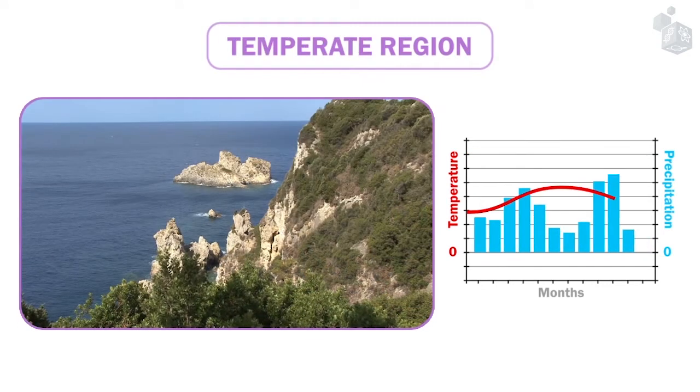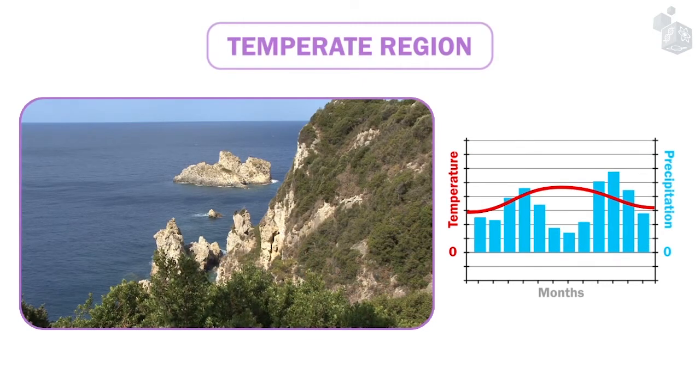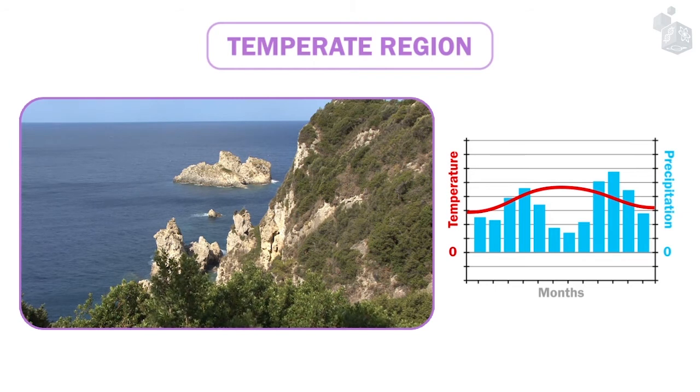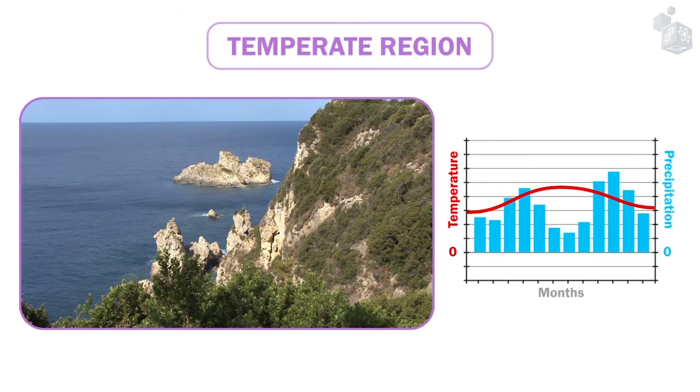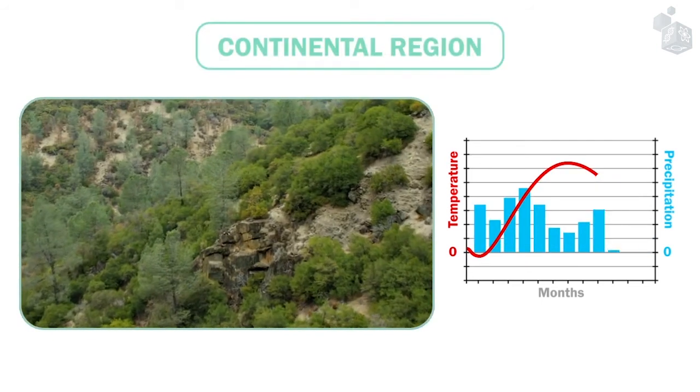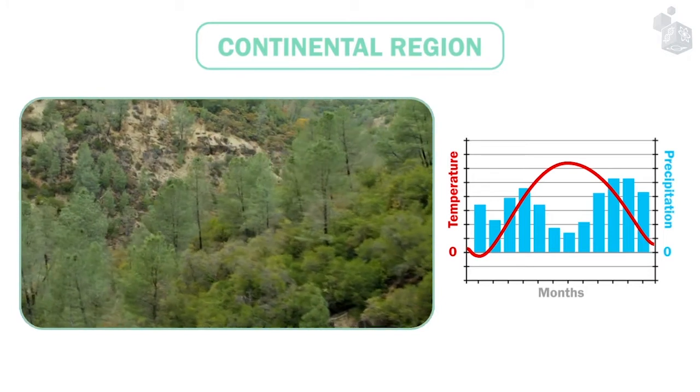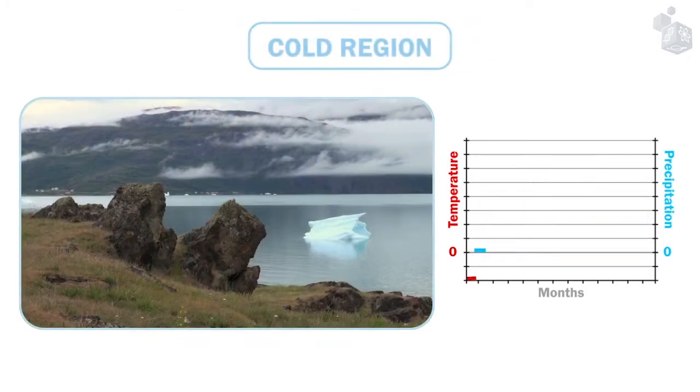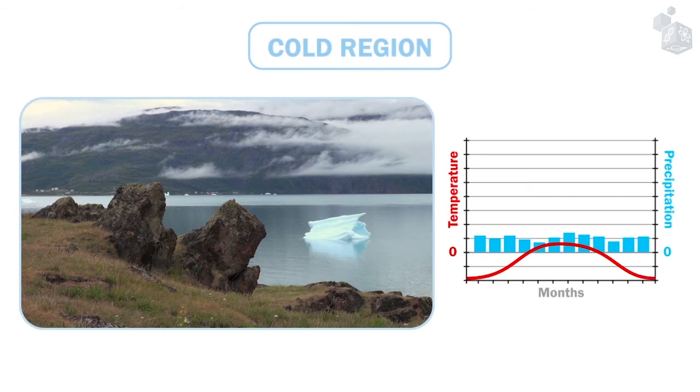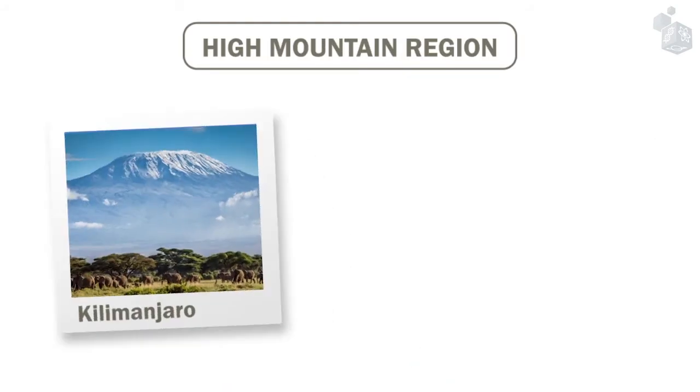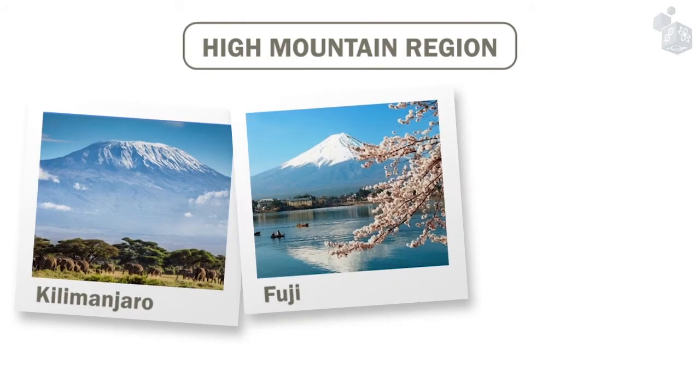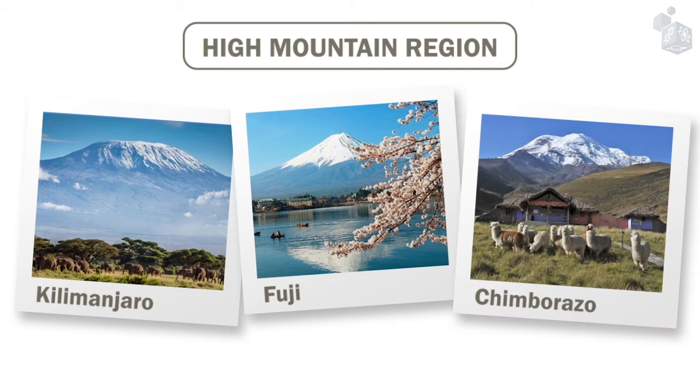Temperate regions are characterized by moderate precipitation levels and mild temperatures due to the influence of oceans. In contrast, continental regions are not affected by the oceans and therefore temperatures are much lower in the winter. Cold regions are characterized by their low temperatures and scant rainfall. Finally, high mountain regions contrast with their surroundings by having much lower temperatures and more precipitation.